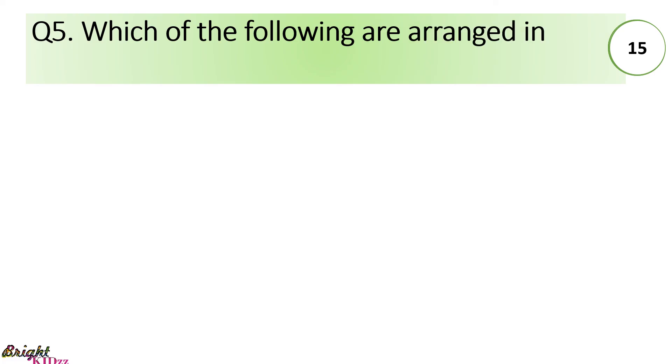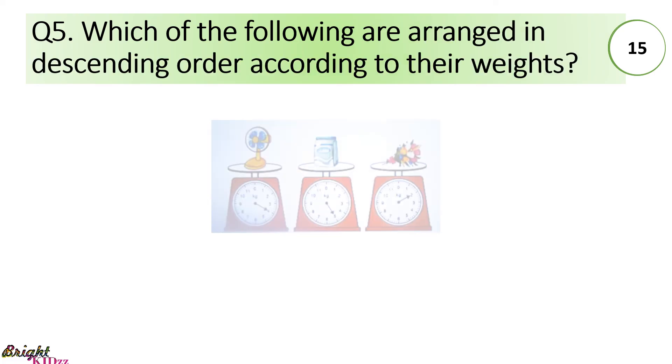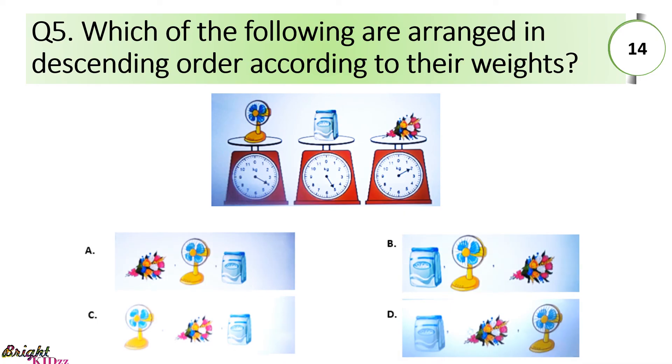Which of the following are arranged in descending order according to their weights? So, here we can see fan is 4 kg. This is 5. This is 2. So, descending is highest to lowest. So, first sugar, then fan and then we have bouquet. So, sugar, fan and bouquet. So, option B is correct.